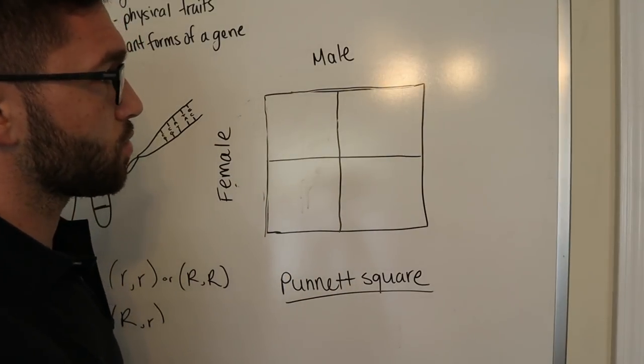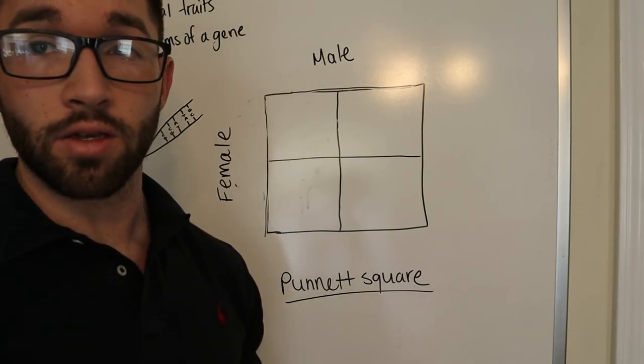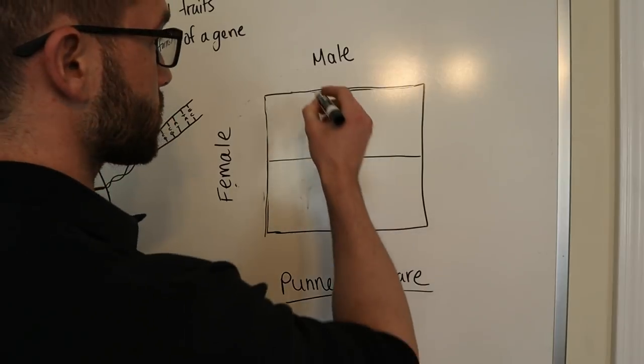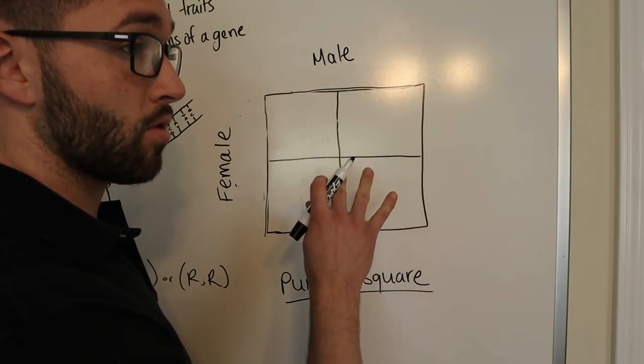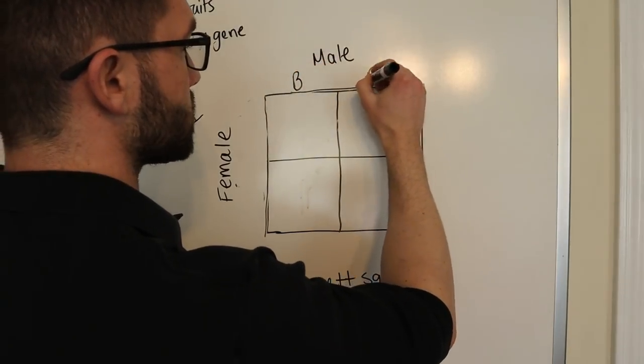And for this case, we'll say that the male is homozygous dominant for brown eyes. So for dominant alleles, we always write uppercase letters. And since he's homozygous, they're identical uppercase letters. So for brown, we'll say uppercase B, uppercase B.